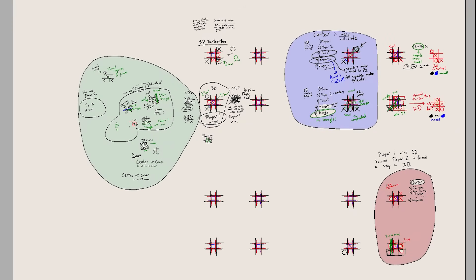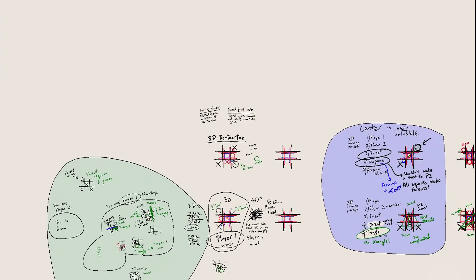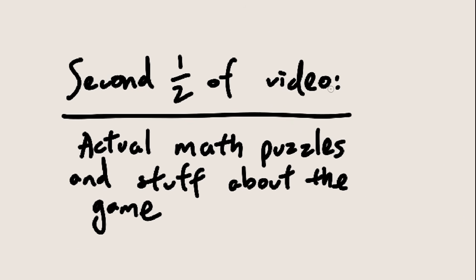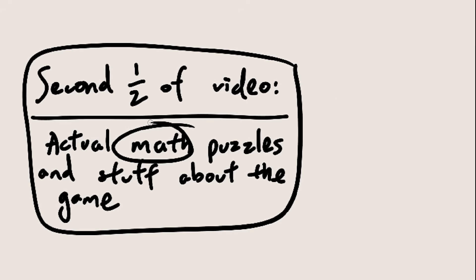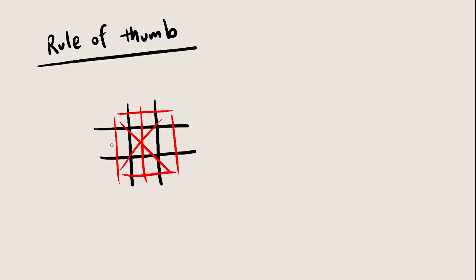Alright, that's pretty much the whole video. But when I was making this video, I found some stuff that I don't want to just throw away. So here it is. This section will slowly get more math-related, rather than game theory-related. Alright, first, a rule of thumb when playing variants of tic-tac-toe is this. The best spots to take are the spots that have the most 3-in-a-rows going through them.